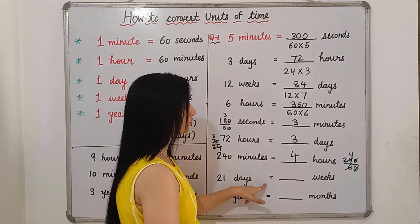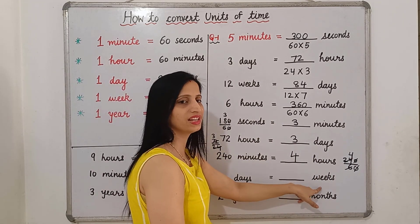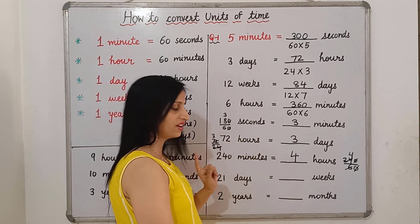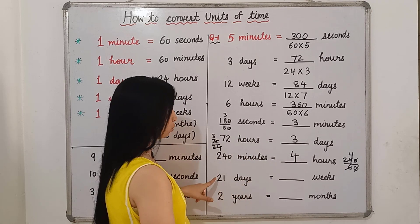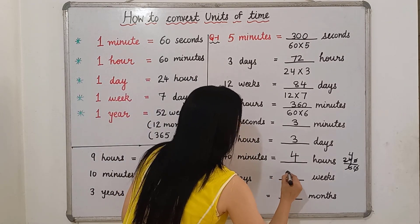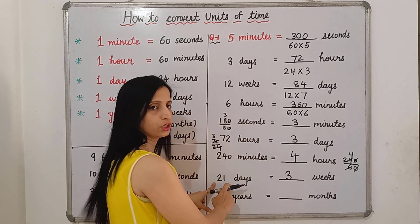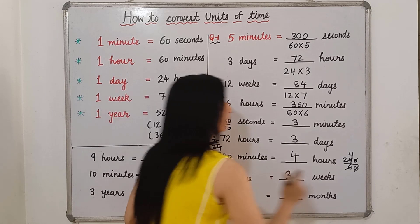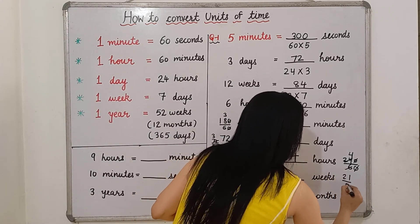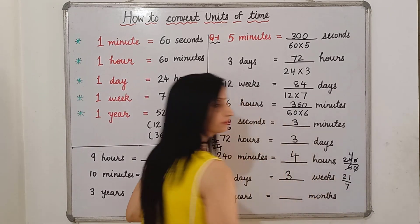21 days is equal to how many weeks? In 1 week there are 7 days, so 21 days means 3 weeks. We divide 21 by 7 and get 3.